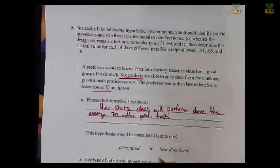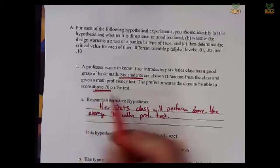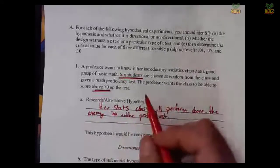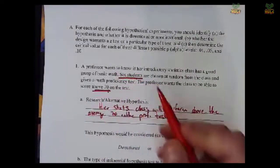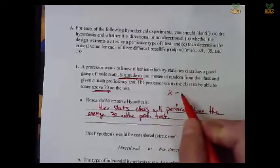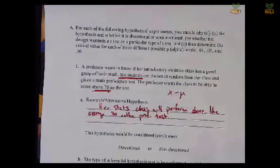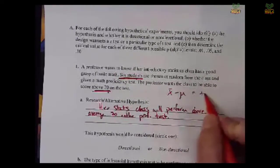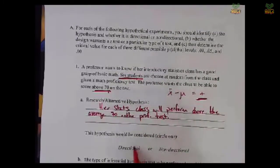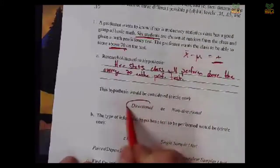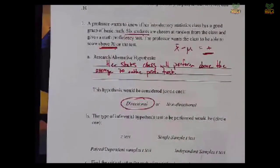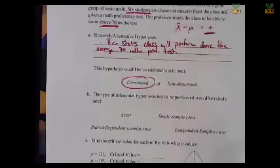Probably that her stats class will perform above the average 70 on the proficiency test. Specific prediction about, in this case, a direction, above 70, which means with the way all of our hypothesis tests are set up, it's always a sample mean versus the population mean. We're saying the sample of six students will be higher than 70, which means that x bar will be higher than that population mean, which would, if the prediction is right, give us a positive outcome. So it's a directional test.